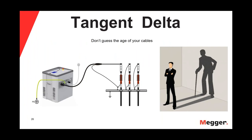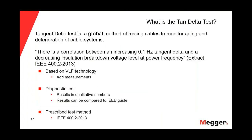We mainly use the tan delta to investigate the aging conditions of the insulation of the cable. We should not guess the age of our cables — that is what the tan delta is for. The tan delta is a global method of testing cables to monitor aging and deterioration. We know there is a correlation between an increasing 0.1 Hz tan delta and a decrease in insulation breakdown voltage at power frequency. The tan delta is based on VLF technology, is a diagnostic tool, and is prescribed by IEEE 400.2 2013.